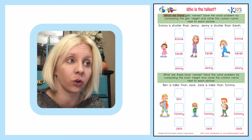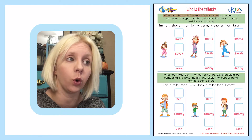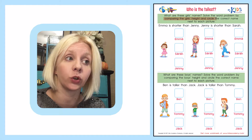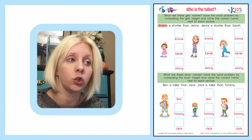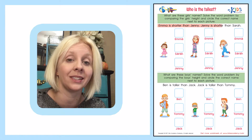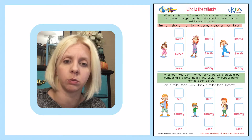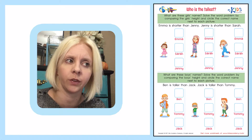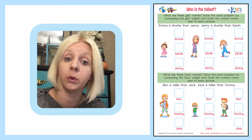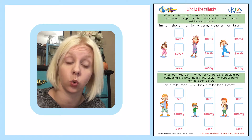What are these girls' names? Solve the word problem by comparing the girls' heights and circle the correct name next to each picture. So the first one says Emma is shorter than Jenny and Jenny is shorter than Sarah. We have to really stop and think. We have to find out who is the tallest, who is in the middle, and who is the shortest.